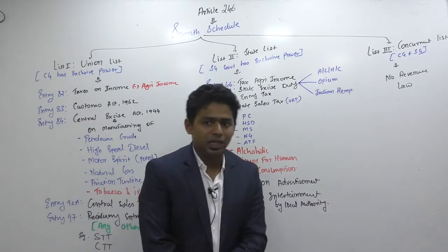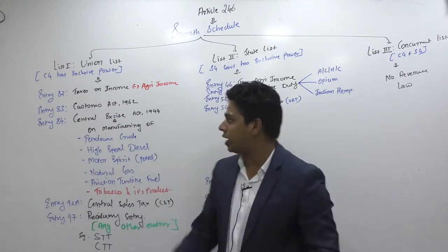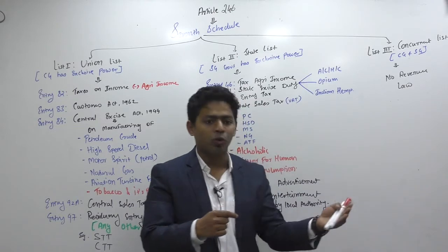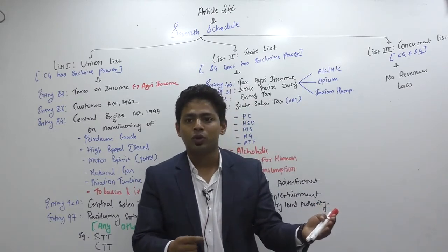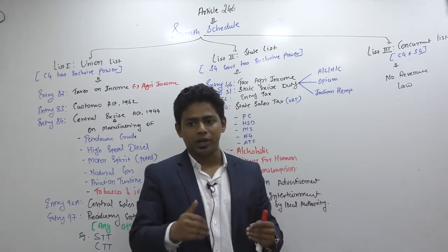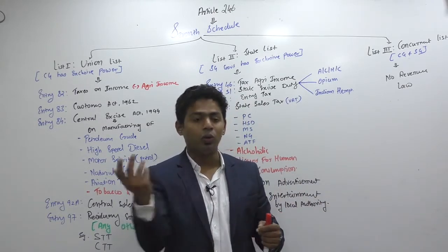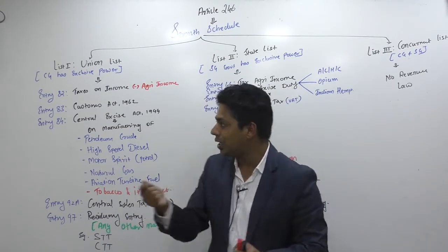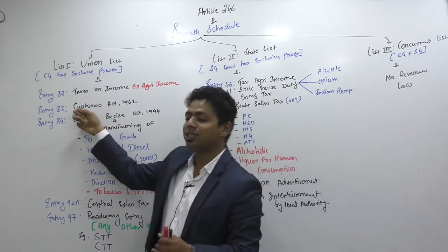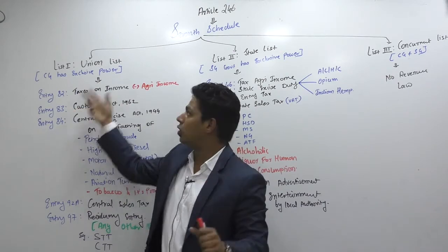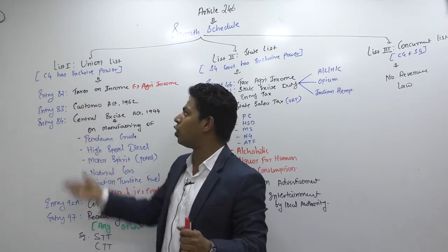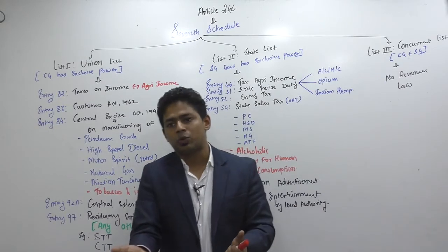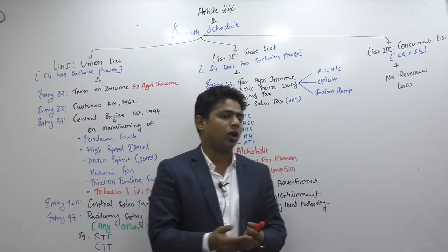Entry number 83 is about the Customs Act. You already know import and export will be charged by the central government. So if goods are importing to Mumbai port, technically it is imported in Maharashtra, but who will collect customs duty? Central government — because it is written in List 1. Anything written in List 1 is a central law.